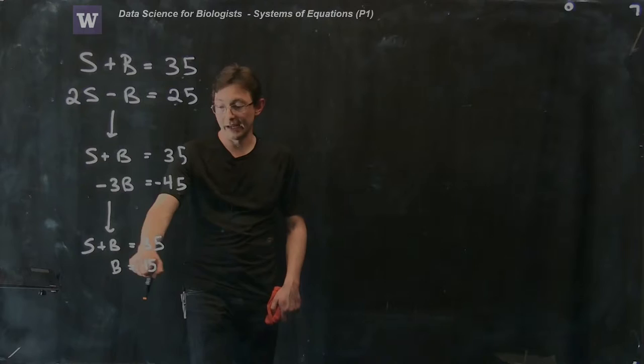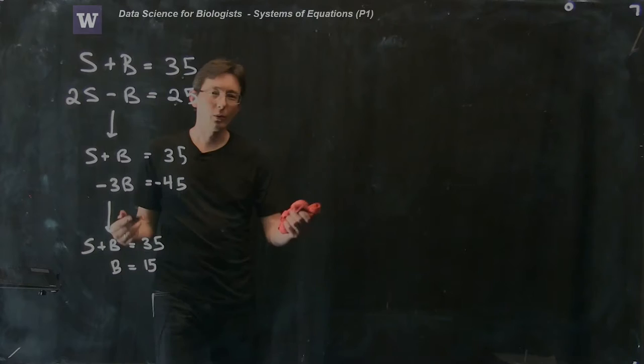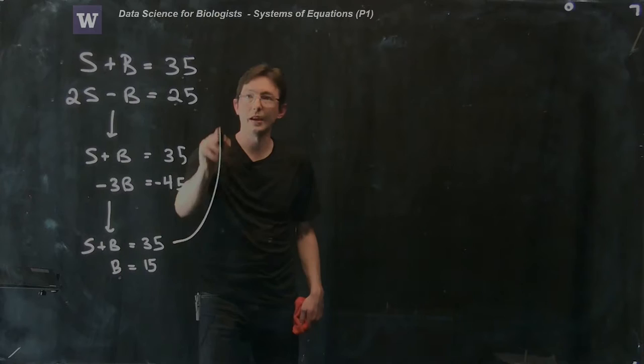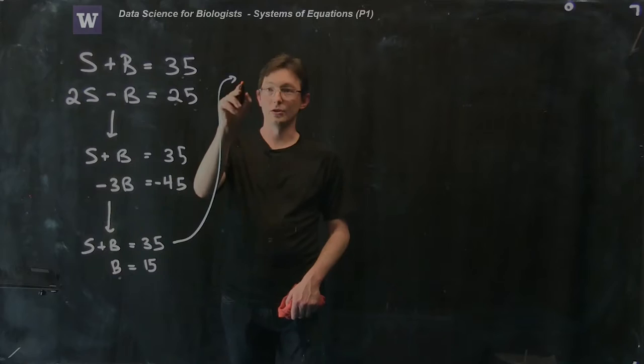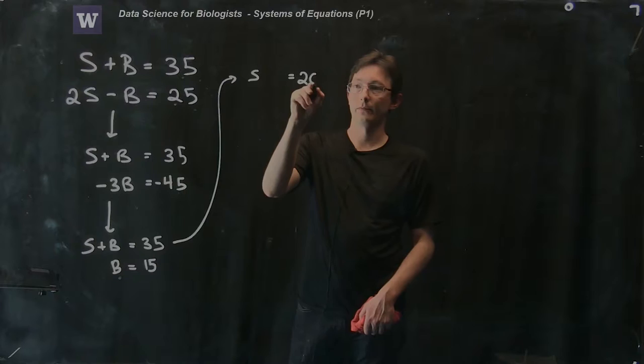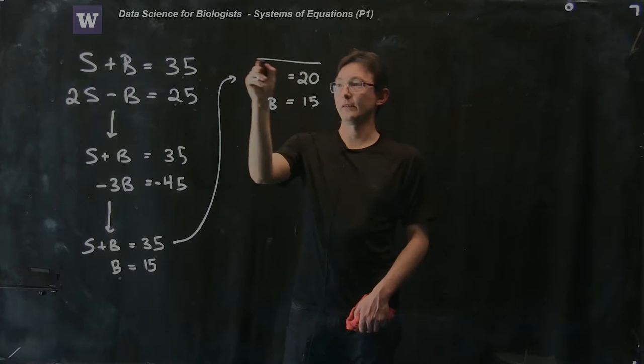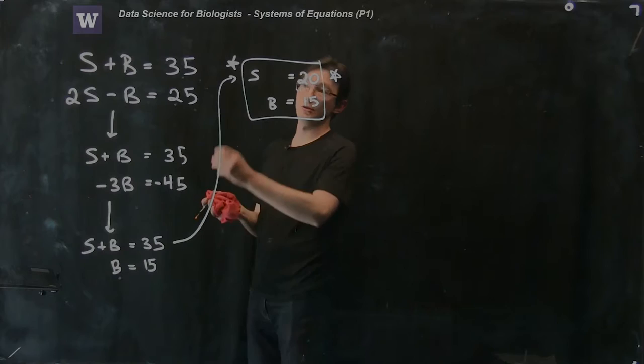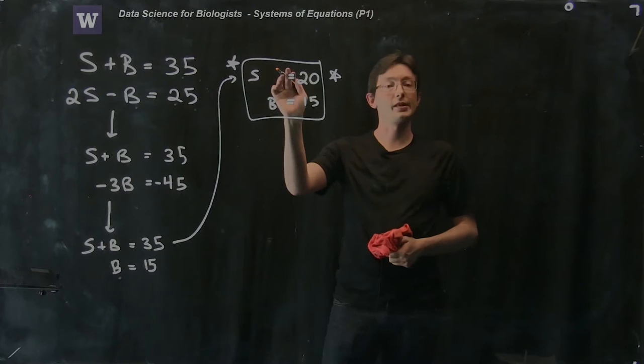Now it's really easy to back substitute. Now I have this information, I'm going to substitute it back into my Sally plus Bob equation, or what I could do is I could just subtract this equation from my first row. The last step is I'm just going to subtract this equation from my first row and I get just Sally equals 35 minus 15 is 20, and just Bob equals 15.